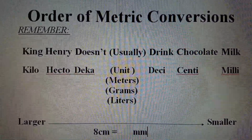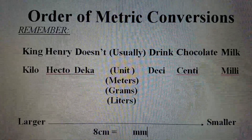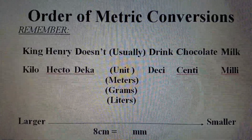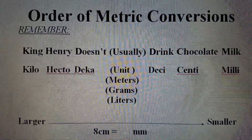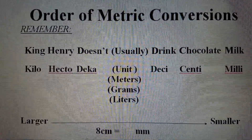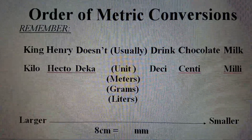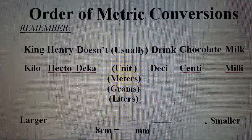In other words, you can either multiply by 10, 100, or 1000, or divide by 10, 100, or 1000.